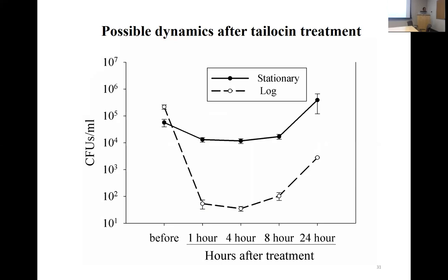Regarding whether resistant cells have a phage integrated that confers resistance: in our case there is probably not a possibility that the phage can integrate, but in a natural environment that could occur. The resistance we do recover all affects LPS biosynthesis, and when we look at the O-antigen it is significantly different compared to the wild-type strain — though bona fide resistance cells don't display altered LPS biosynthesis in the same way.